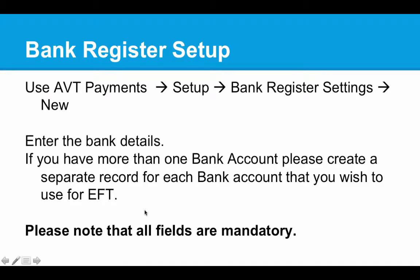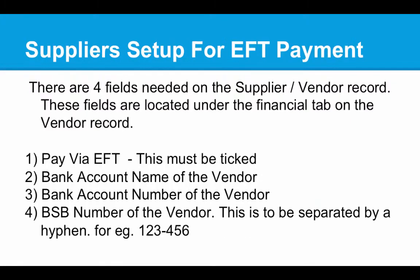Now that we are familiar with the bank register setup, let us move on to supplier setup for EFT payment. On a supplier's record, these are the fields that we need to fill in. Number one is Pay via EFT — this needs to be ticked. Number two is the bank account name of the vendor, then the bank account number of the vendor. We also need to enter the BSB number of the vendor, to be separated by a hyphen — for example, 123-456. Let's go into NetSuite and let me demonstrate that.